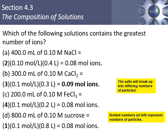The answer is choice B — calcium chloride. Starting with 0.1 M and 300 mL (0.3 L), multiply to get moles, then multiply by 3 because CaCl2 breaks into three particles, giving 0.09 moles of ions. NaCl gives 0.08, FeCl3 gives 0.08, and sucrose also gives 0.08. Calcium chloride has the highest number of ions at 0.09.